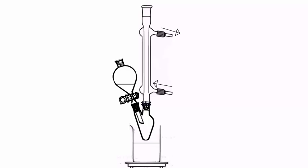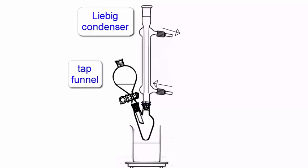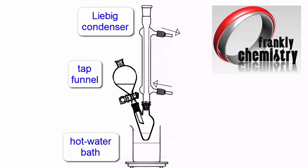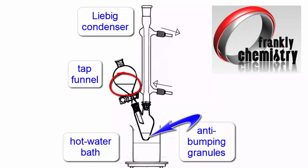You would have your second reactant in the tap funnel. Important also to add anti-bumping granules to the flask to promote smooth boiling. Then you can add your second reactant from the tap funnel, slowly, or in stages throughout the practical.